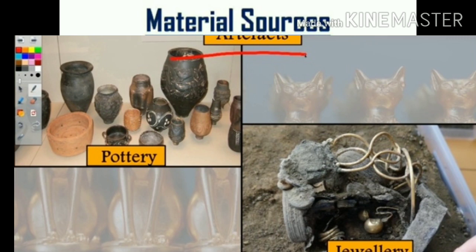Now coming to coins. Coins are made of gold, silver, and copper. The coins show the picture of the king or the queen. Coins also give the information of the year.